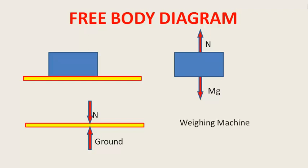अब एक important concept — weighing machine। Layman's language में आप कहेंगे weighing machine आदमी का weight नापती है, लेकिन ये बात सच नहीं है। जब आप हाथ से weighing machine को दबाएंगे तो कुछ reading आएगी — वो आपके हाथ की reading नहीं है, बल्कि हाथ के द्वारा लगाई गई force की reading है। Basically weighing machine force नापती है — force कम लगाएं तो reading कम, force ज्यादा लगाएं तो reading ज्यादा।